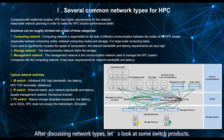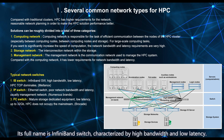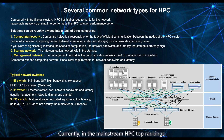After discussing network types, let's look at some switch products. The first is the IB switch, which is a core device in HPC. Its full name is InfiniBand switch, characterized by high bandwidth and low latency. Currently, in the mainstream HPC top rankings, designs using the HPC approach with InfiniBand are predominant.